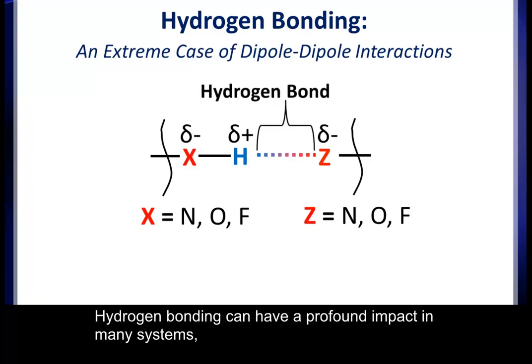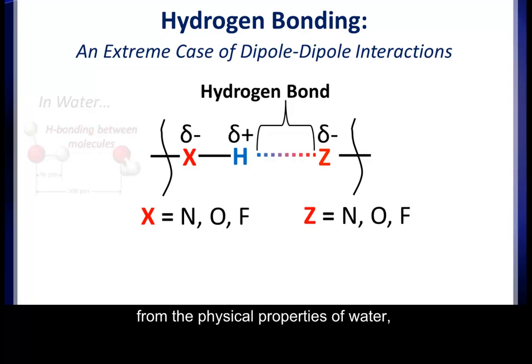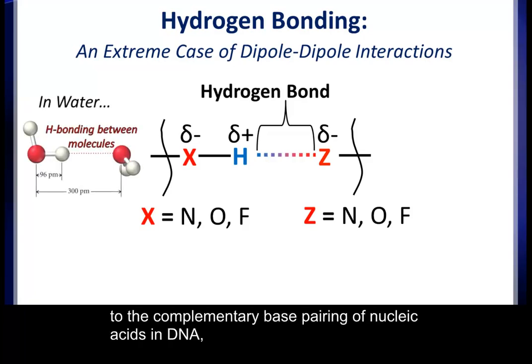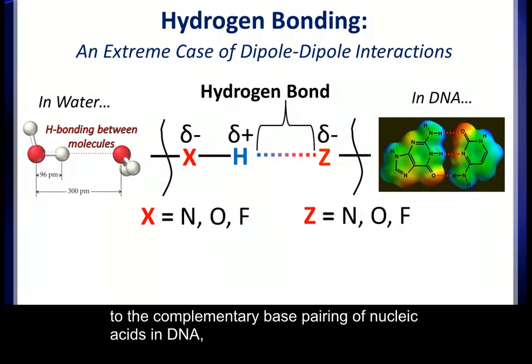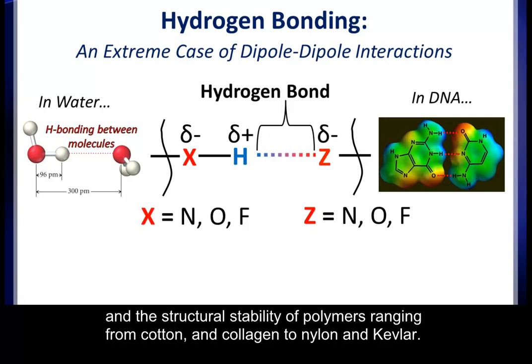Hydrogen bonding can have a profound impact in many systems, from the physical properties of water, to the complementary base pairing of nucleic acids in DNA, and the structural stability of polymers ranging from cotton and collagen to nylon and Kevlar.